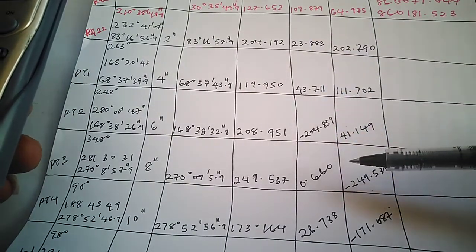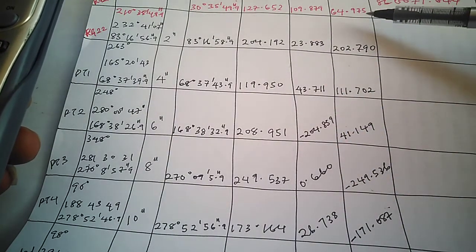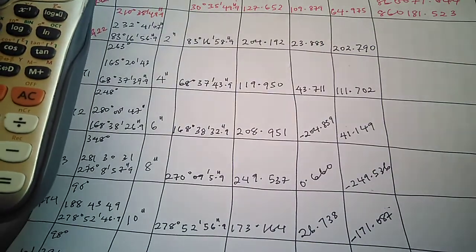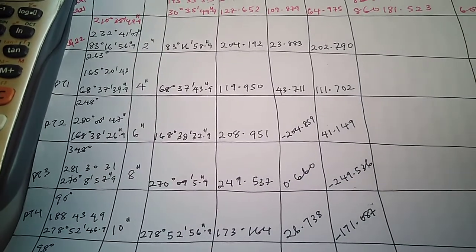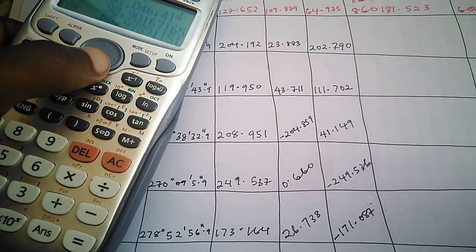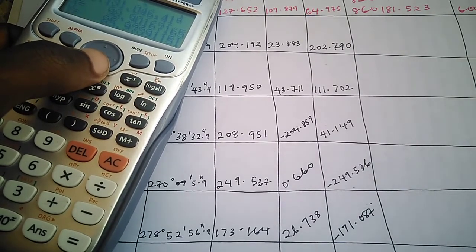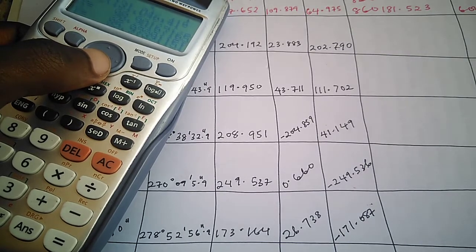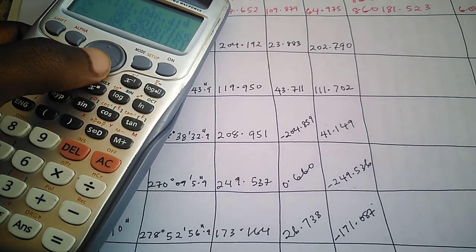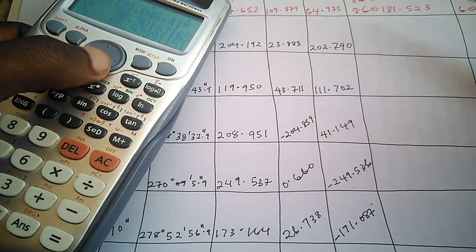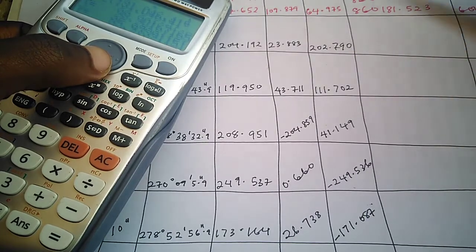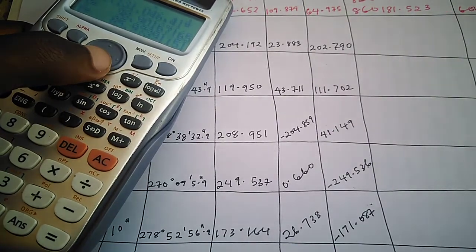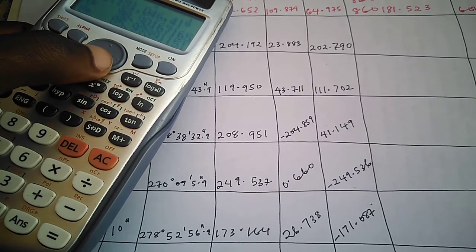So far we've been able to get our delta northing and delta easting — the partial coordinates. Thanks for watching this video. If you haven't subscribed, please subscribe — that's how you encourage us to keep giving you the best content. On our next video we'll get the arithmetic sum for each line, then compute uncorrected coordinates, corrections, and corrected coordinates. See you in the next video, thank you very much.